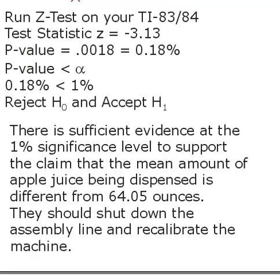There is sufficient evidence at the 1% significance level to support the claim that the mean amount of apple juice being dispensed is different from 64.05 ounces. They should shut down the assembly line and recalibrate the machine. If we are wrong about this, it's a type 1 error. Isn't it nice to know there's only 1% probability of making this type 1 error?